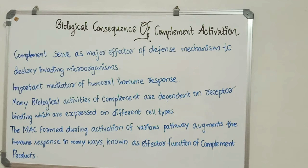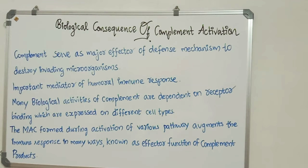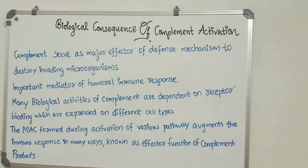Many biological activities of complement are dependent on receptor binding, which means the complement has different types of receptors on its regions that are expressed on different cell types. According to the classical pathway, alternative pathway, and mannose-binding lectin pathway, the final product formed is MAC — Membrane Attack Complex. These membrane attack complexes, formed during activation of various pathways, augment the immune responses in many ways. This is known as the effector function of complement products.